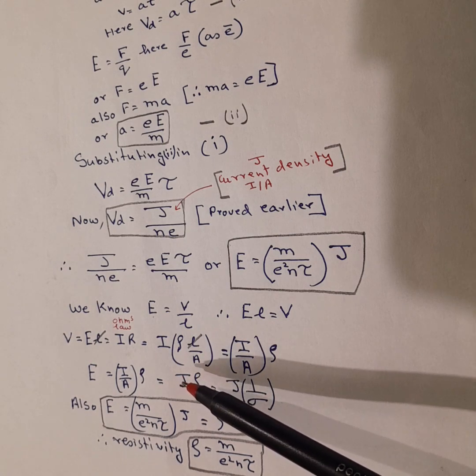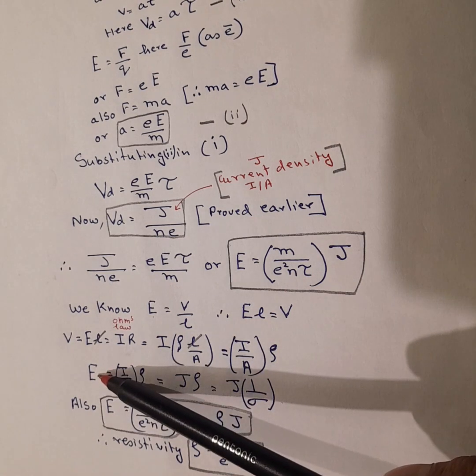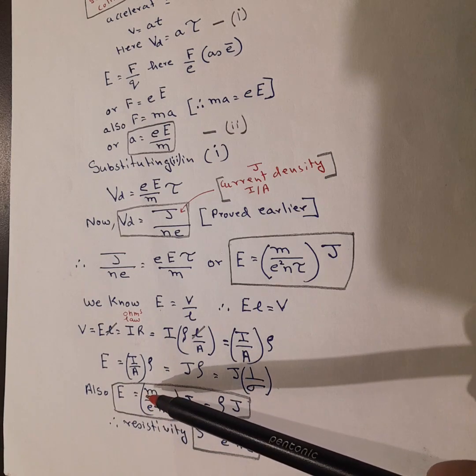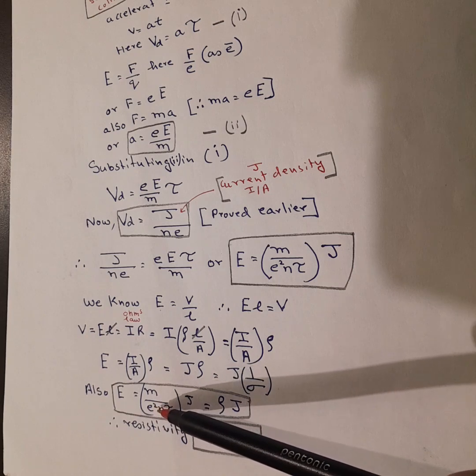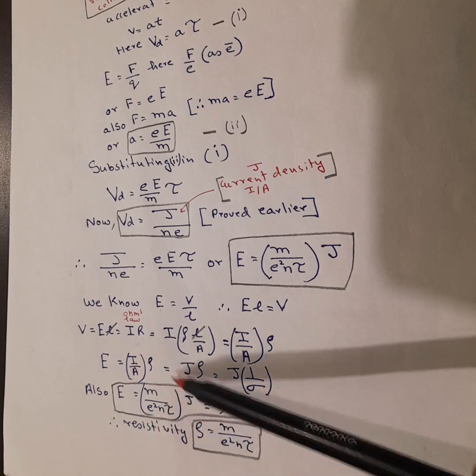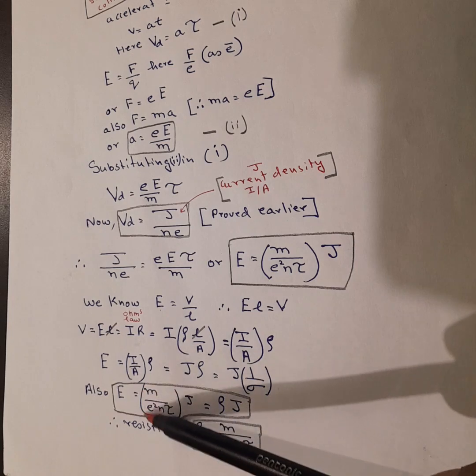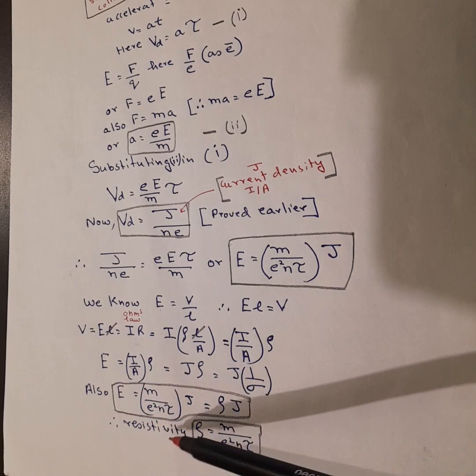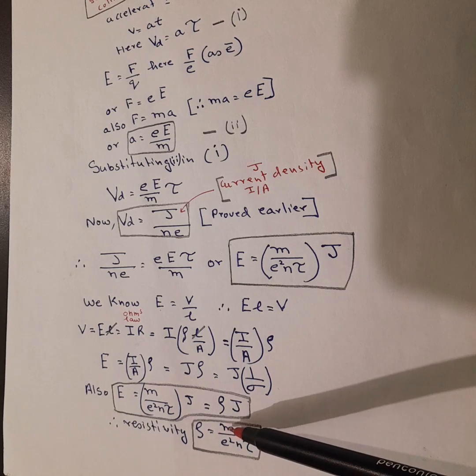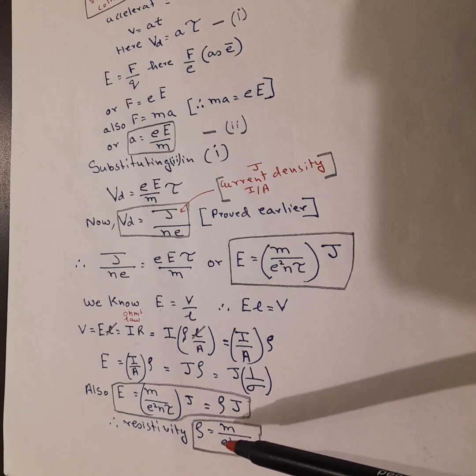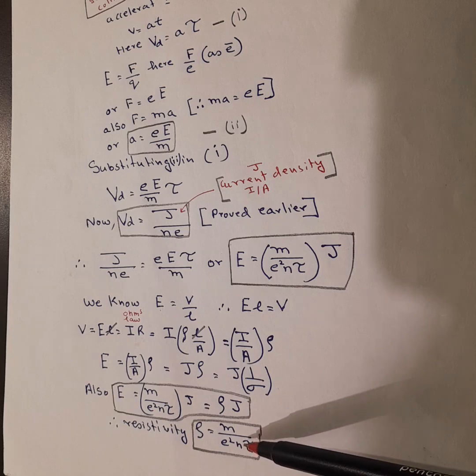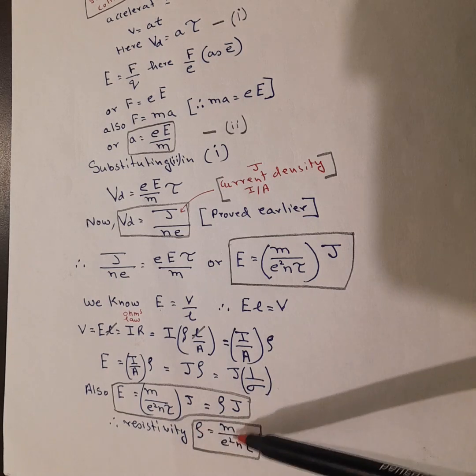Now if it is J rho for E, then we also have formula for E which we have derived already, M divided by e square N tau into J. So J and J. So if we compare these two formulas, J gets cancelled. So rho gets the formula of this. So resistivity or rho is also equal to M upon e square N tau: mass of electron, charge of electron, number of electrons, and the average time between two successive collisions. So this is also formula.